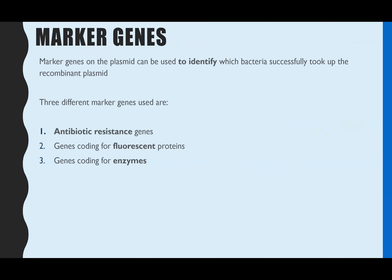There are three key methods used for this, and they all involve using a marker gene. Within the plasmid there is a gene which can create a protein, which will then enable you to identify which bacteria contain the plasmid. The three different marker genes used are antibiotic resistance genes, and more commonly now, genes that code for fluorescence and enzymes, because these are much quicker methods.